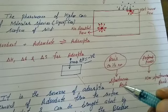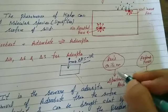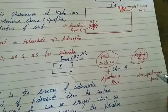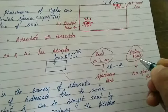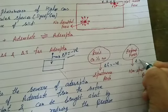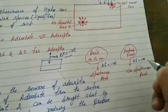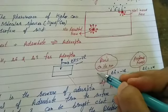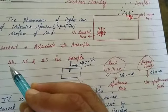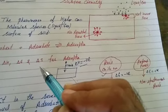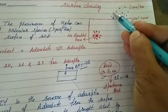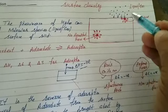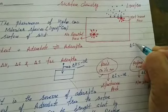Spontaneous reactions proceed on their own, and for spontaneous reactions ΔG is negative. Non-spontaneous reactions proceed by external forces, and for non-spontaneous reactions ΔG is positive. Adsorption is a spontaneous process — it proceeds on its own — so ΔG is negative. For entropy ΔS: adsorption is the accumulation of molecular species on the surface of adsorbent, so there is a decrease in randomness and disorder. When disorder decreases, entropy decreases. So ΔS is also negative.